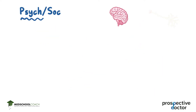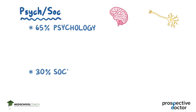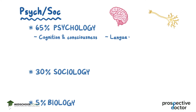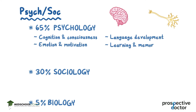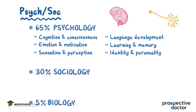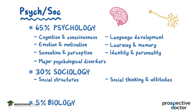The Psych-Soci section consists of 65% Psychology, 30% Sociology, and 5% Biology. Psychology topics include Cognition and Consciousness, Language Development, Emotion and Motivation, Learning and Memory, Sensation and Perception, Identity and Personality, and Major Psychological Disorders. Sociology topics focus on social structures, social thinking and attitudes, as well as societal stratification and inequality.